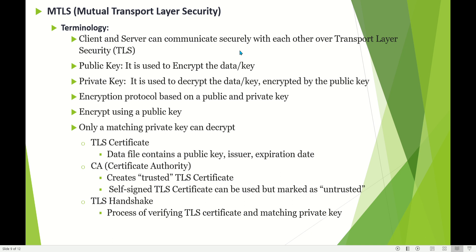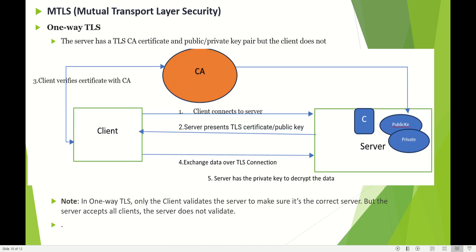Client and server can communicate securely with each other over TLS — transport layer security. There is a public key, used to encrypt data, and a private key, used to decrypt data encrypted by the public key. The private key is stored with the same organization where it was created and is not shared with anyone else, but the public key can be shared outside the organization. A TLS certificate is a data file that contains the public key, issuer, and expiration date. A certificate authority (CA) creates trusted TLS certificates. Self-signed TLS certificates can be used but are marked as untrusted. A TLS handshake is the process of verifying a TLS certificate and matching private key.